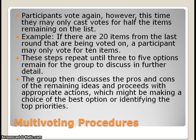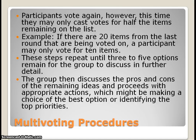Participants vote again, this time casting votes for only half the remaining items. For example, if there are 20 items remaining, a participant can only vote for 10. These steps repeat as many times as necessary until around three to five options remain, allowing the group to work through the process more specifically.